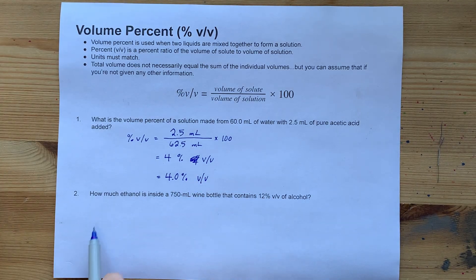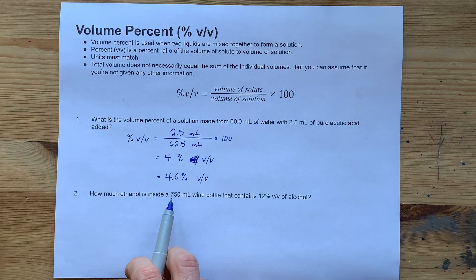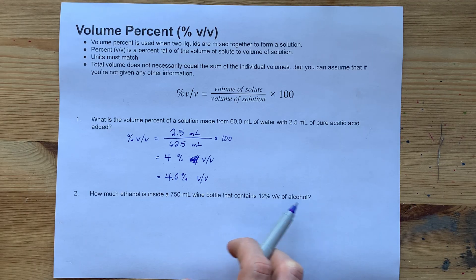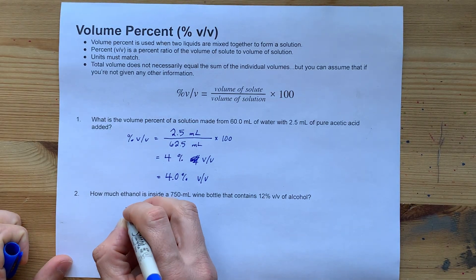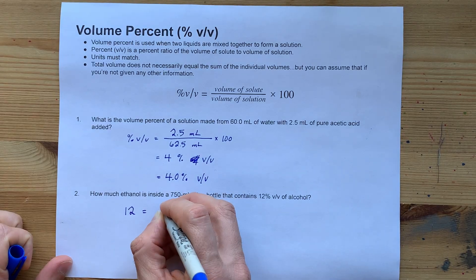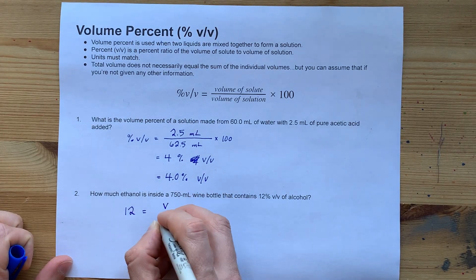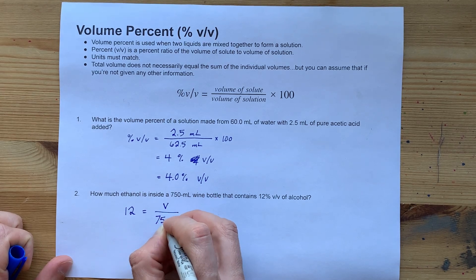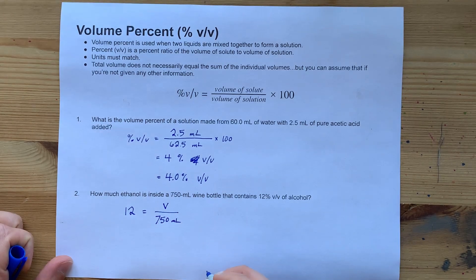All right. How much ethanol is in a 750 milliliter wine bottle that contains 12 percent by volume of alcohol? Here, you're being given the percent V over V. You're being asked for the volume of alcohol inside of it, but you're told that the whole thing is 750 milliliters.